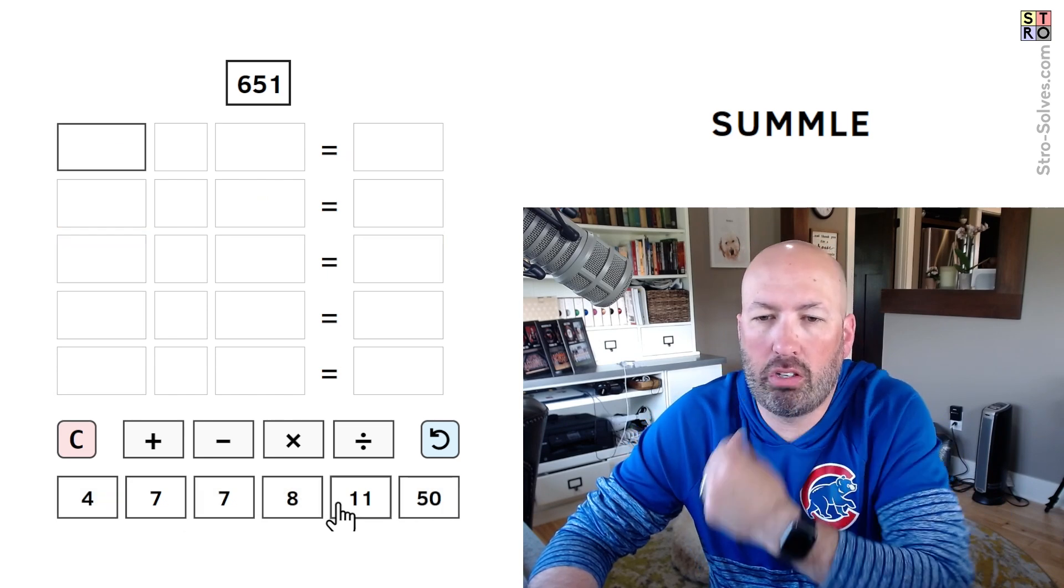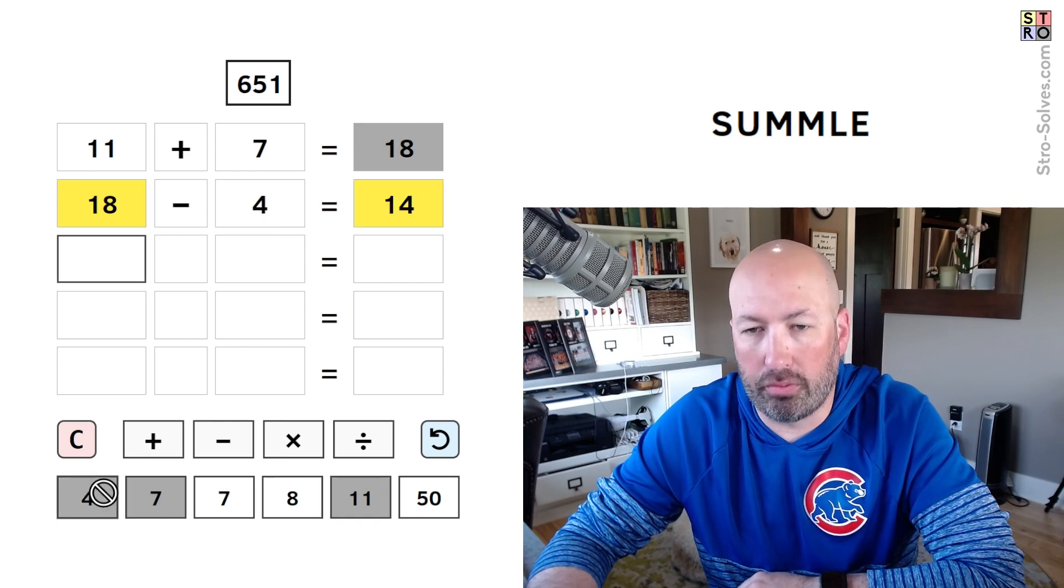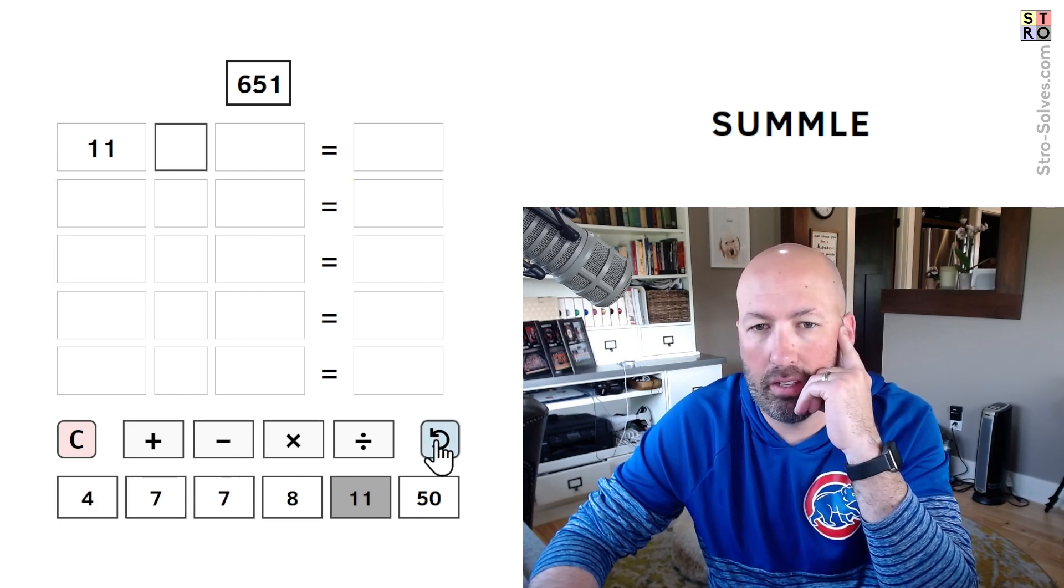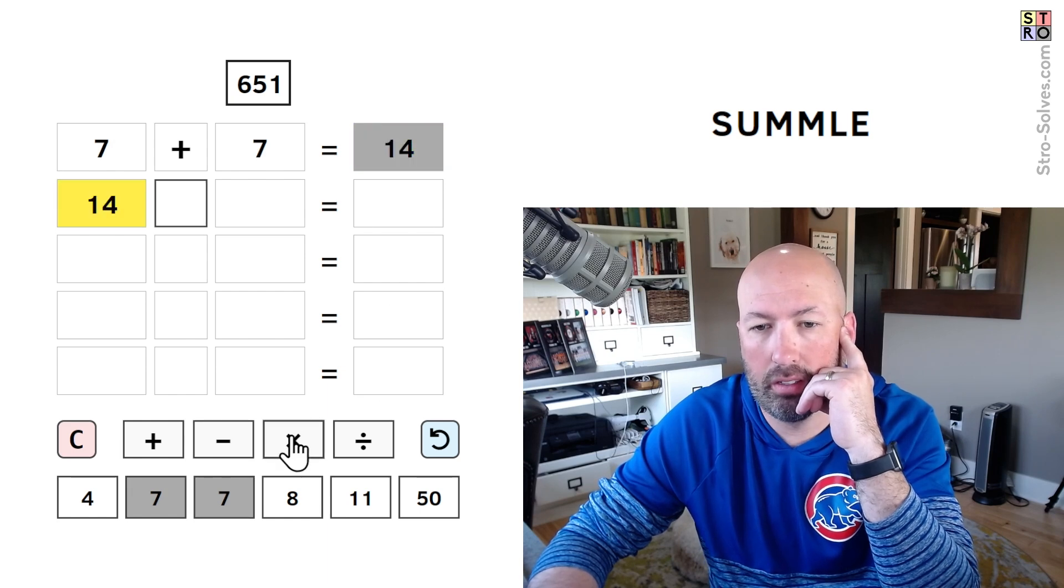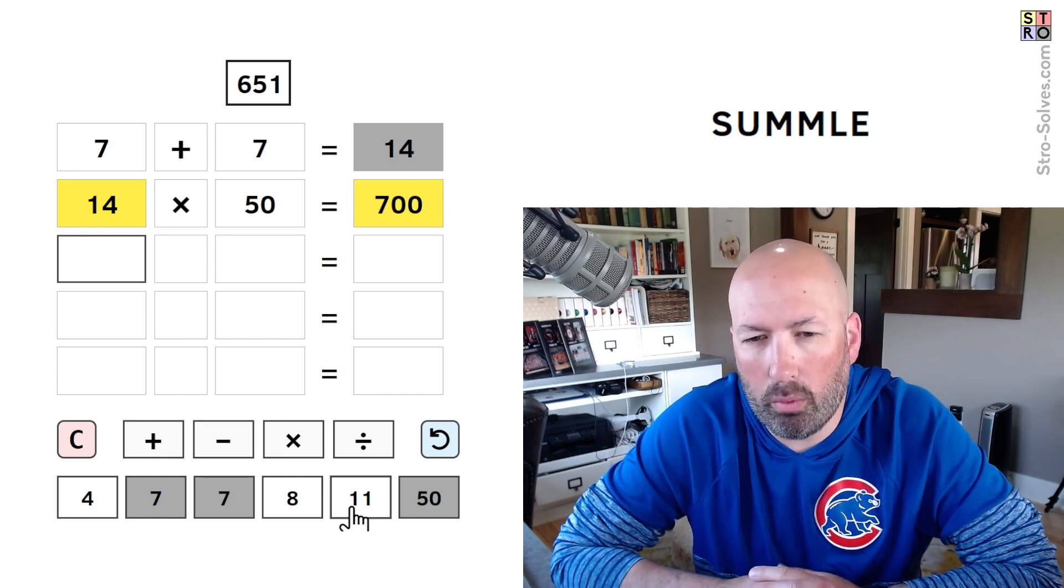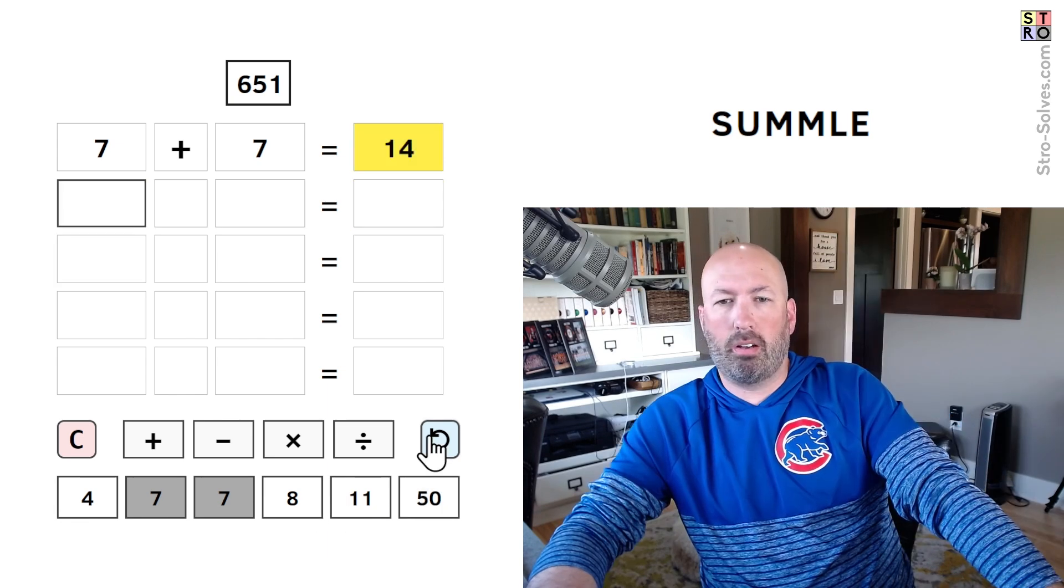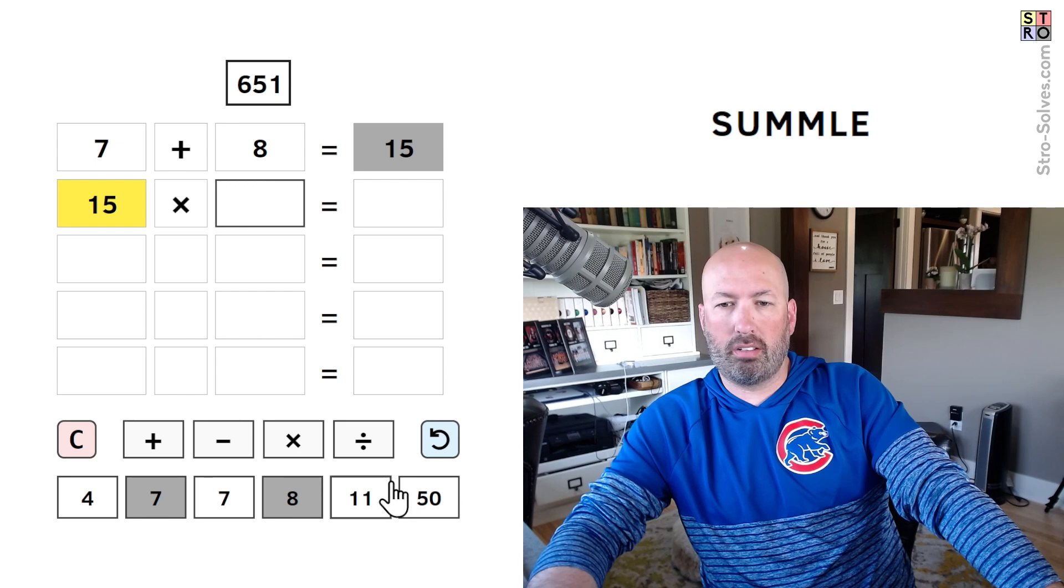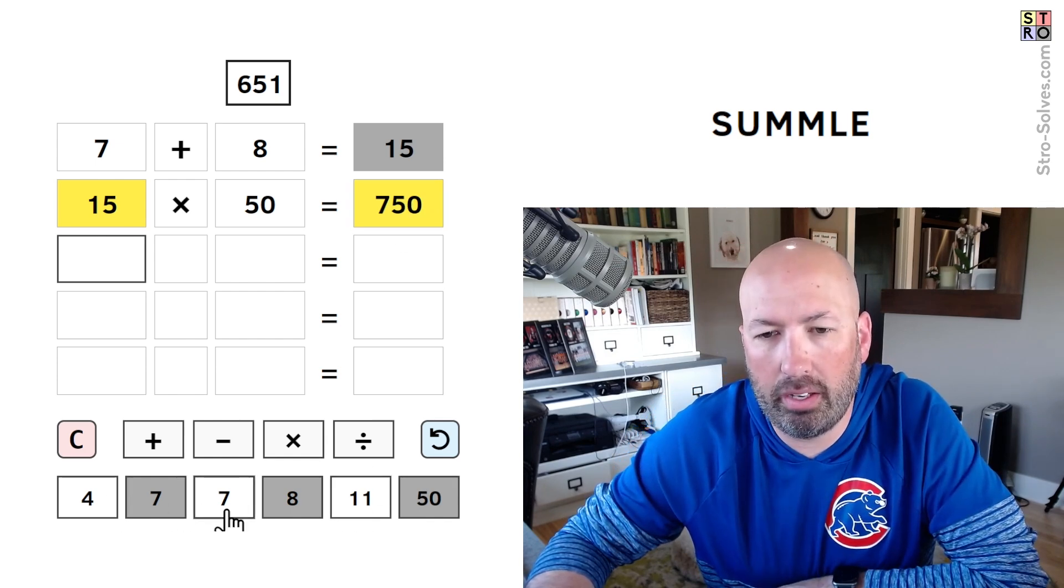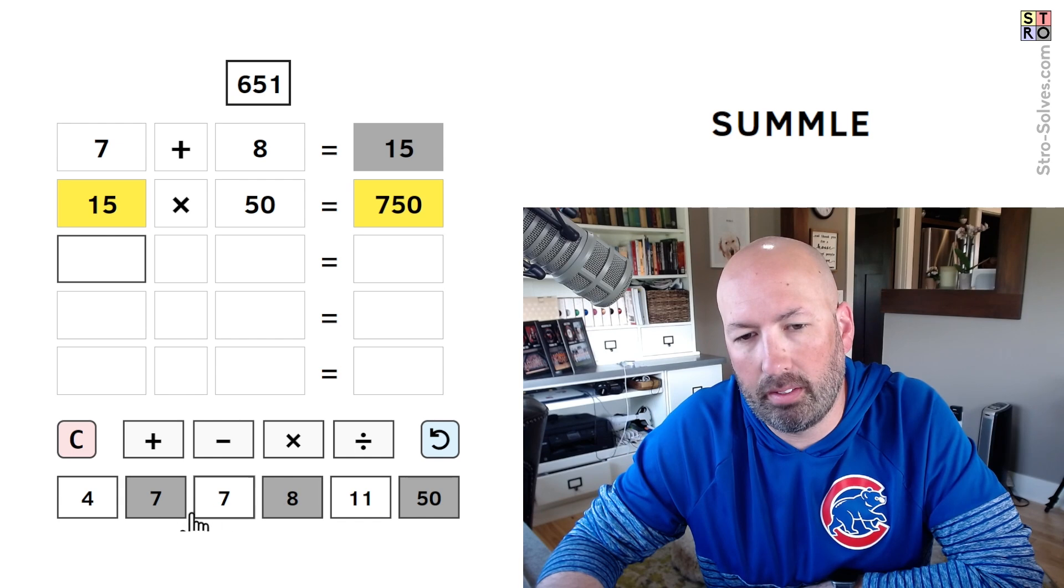And you could do, like, 11 plus 7 minus 4 to get to 14, but again, we've used one of the 7s that we needed to use to get to 49. You could also do 7 plus 7 is 14. Is there a way to get 49 with these three? We can get 44 with 4 times 11. We can get 32 with 4 times 8. We could also do 7 plus 8 times 50. But now we're getting even farther away. Now we need to subtract 99, and we can't quite. 9 times 11 is 99, but this doesn't quite get us 9.